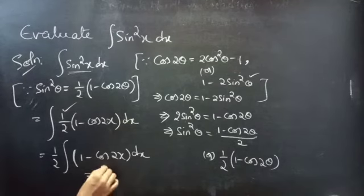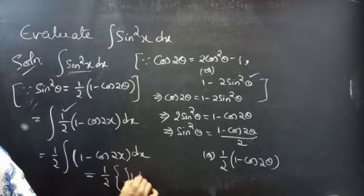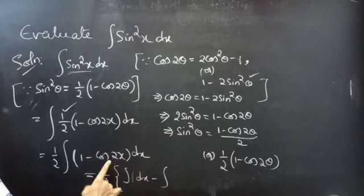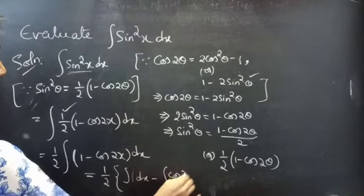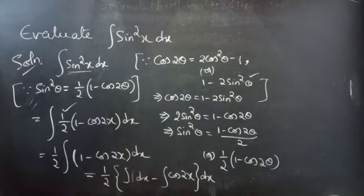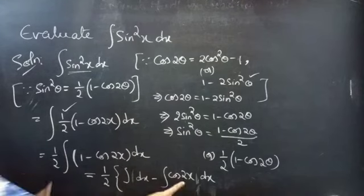This equals 1 by 2 times integral 1 dx, that is integral dx, minus integral cos 2x dx.